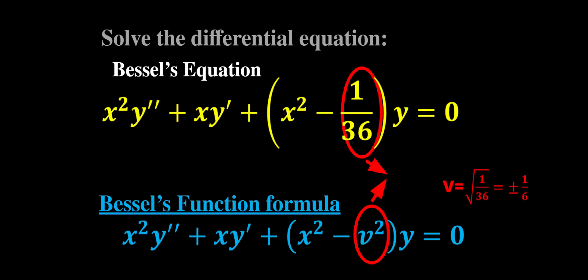Our v is ±1/6. This is the order of our equation, sometimes even called the index of the equation. We need to notice that this is one of two possibilities: non-integer or integer order. Here we are working with a non-integer since v is 1/6.